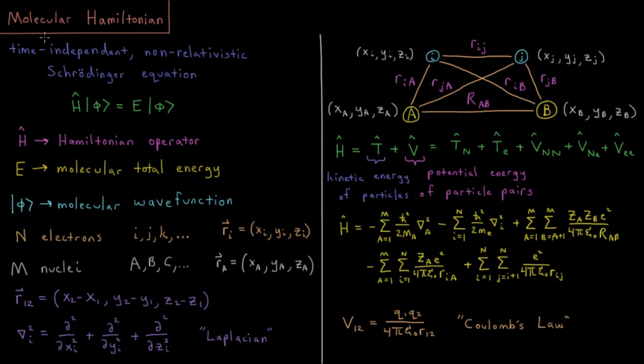So to start, we're going to begin with the molecular Hamiltonian again. We are trying to get solutions to the time-independent non-relativistic Schrödinger equation H|ψ⟩ = E|ψ⟩. Just like in all of quantum mechanics, we're trying to solve the Schrödinger equation which gives us the wave function of the molecule.